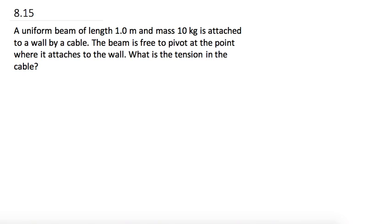OK, so this is question 8.15, and it says: a uniform beam of length 1 meter and mass 10 kilograms is attached to a wall by a cable. The beam is free to pivot at the point where it attaches to the wall. What is the tension in the cable?